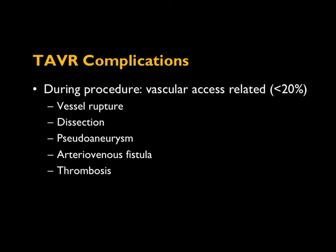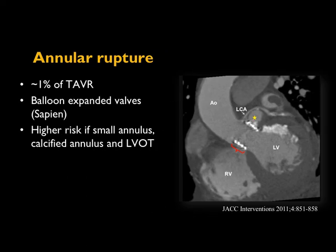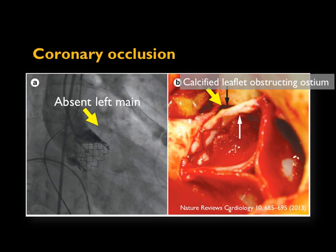Vascular access-related complications were traditionally quoted at around 20% but have come down considerably with smaller-profile sheaths. Annular rupture occurs in about 1% of TAVR cases or less, seen more with balloon-expandable Sapien valves, and is higher risk when the annulus is small or calcified. Here's an example from the literature showing a pseudoaneurysm related to a contained annular rupture in a patient who had a Sapien valve.